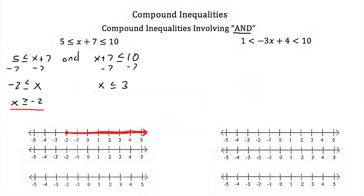Our second equation is x is less than or equal to 3. I can graph that on a number line. I would go to 3 on the number line, put a solid point because it's equal to, and shade everything to the left, or everything less than 3, on the number line.